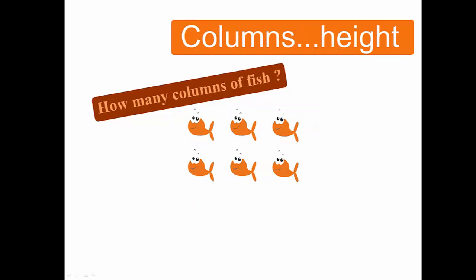Differently, columns run the height of the grid and run up and down. Here we'd have three columns of fish.